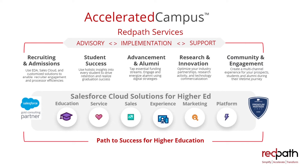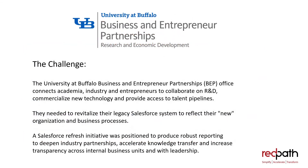The fourth component of the Accelerated Campus framework is the Redpath Path to Success for Higher Education. This creates a roadmap of how to understand your requirements and lay out a successful Salesforce implementation for your organization.